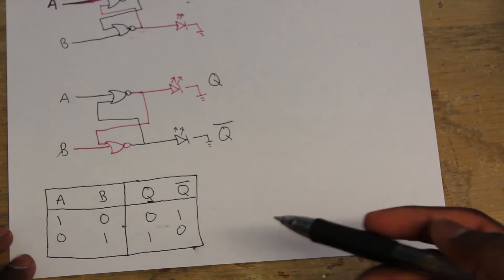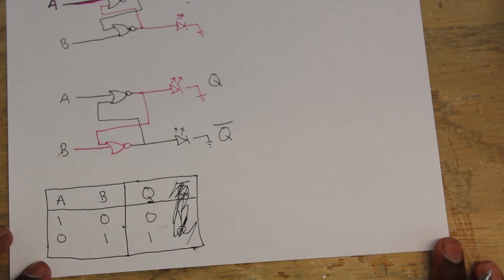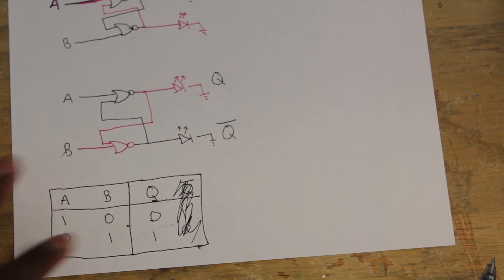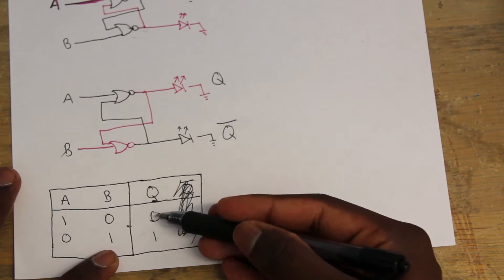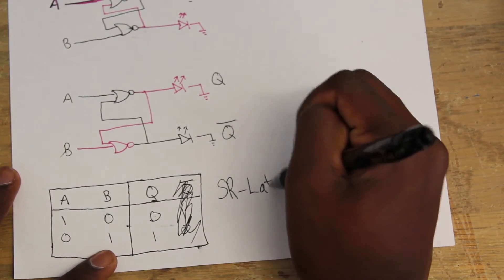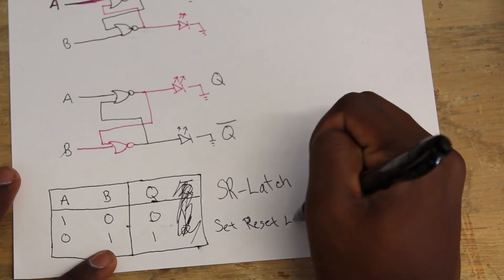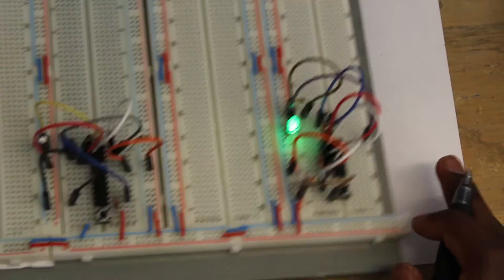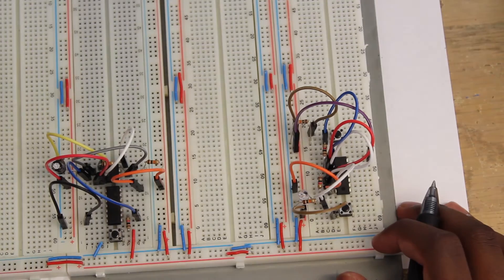Now, watch what happens when I do this. If A is one, the value is zero. If B is one, the value is one. Or in other words, pressing A resets the value of Q back to zero, and pressing B sets the value of Q to one. So when we say it's called an SR latch, SR stands for Set Reset Latch. That's what it is. I'm going to do you guys a little favor and remove that LED.